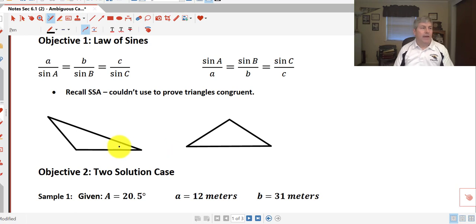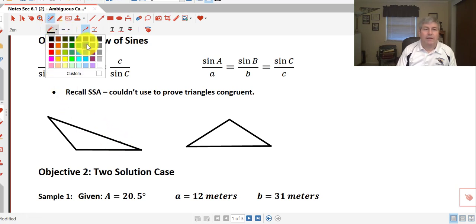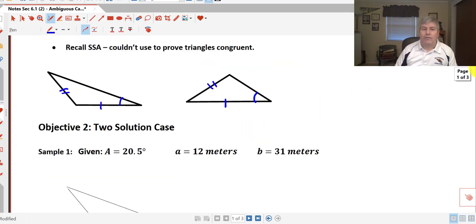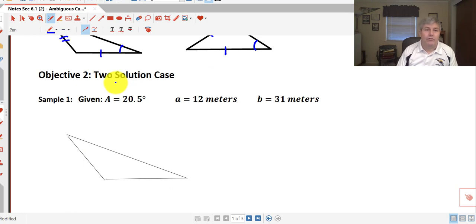Recall that when we had side-side-angle back in geometry, we couldn't use this to prove the triangles congruent. We don't know if the triangle is obtuse or acute based on the given information. It could be either of these. Thus, side-side-angle is the ambiguous case. With side-side-angle, there is a possibility that we could have two solutions.